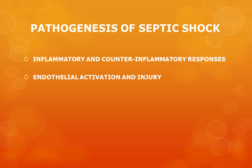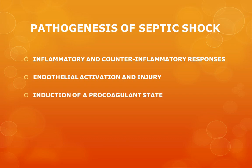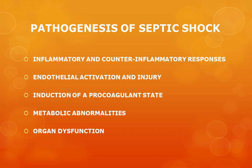The pathogenetic mechanisms of septic shock include: systemic inflammatory response syndrome (SIRS), endothelial injury and endothelial cell activation, induction of a pro-coagulant state, metabolic abnormalities such as diabetes mellitus, and organ dysfunction. We will now discuss each of these mechanisms one by one.